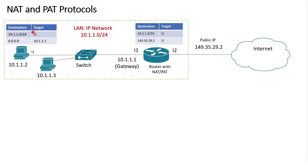Let's start with the routing table for the host. In this routing table, if the destination is the local area network, we send the traffic to interface I1. If the destination is not in the local area network, we send the traffic to this IP — this IP is the gateway. In the routing table of the router, if the destination is the local area network, we send the traffic to interface I1. And if the destination is not the local area network, we send the traffic to the internet via interface I2.